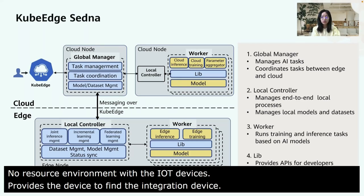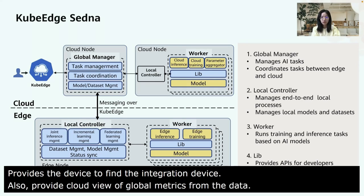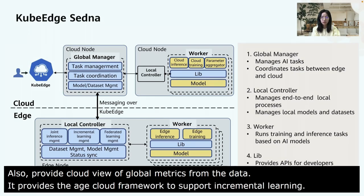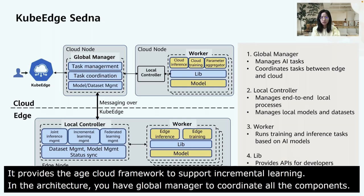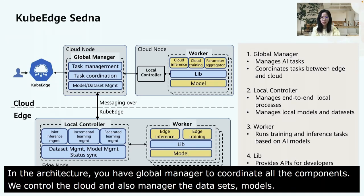The SEDNA project is an AI toolkit built on top of KubeEdge. It provides an edge-cloud synergy AI framework to support joint inference, incremental learning, and federated learning. In the SEDNA architecture, there is a centralized global manager in the cloud to coordinate with all components on different edge nodes. On each edge node, there is a local controller to manage edge-cloud AI tasks, including datasets, models, and status synchronization. SEDNA also provides APIs for developers to quickly integrate third-party algorithms through the library.